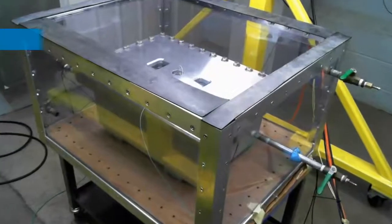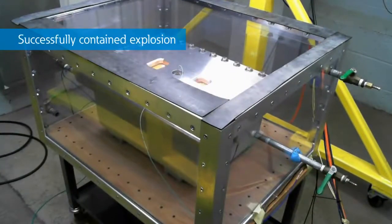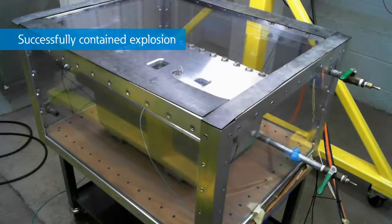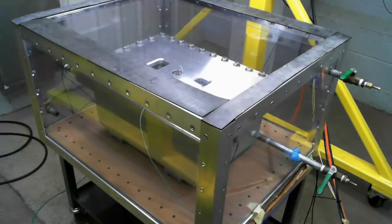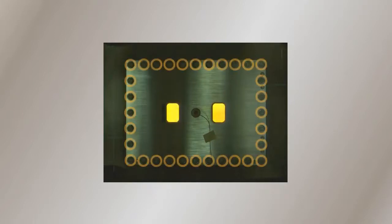NEMA 7 enclosure successfully containing an internal combustion, cooling the explosive gases and preventing the outside hazardous atmosphere from igniting. Watch again in slow motion as the enclosure withstands the combustion forces and cools the explosive gas by diverting it through all the engineered flame paths.